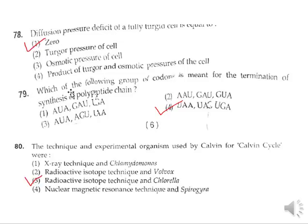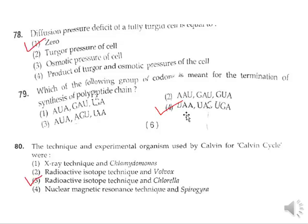Question 79: Which of the following group of codons is meant for termination of synthesis of polypeptide chain? The correct answer is option 4: UAA, UAG, and UGA. These three are the stop codons.